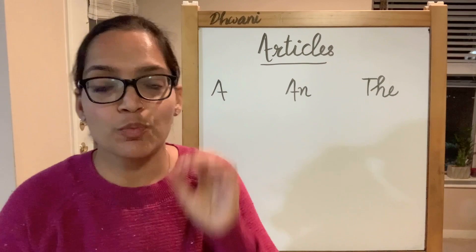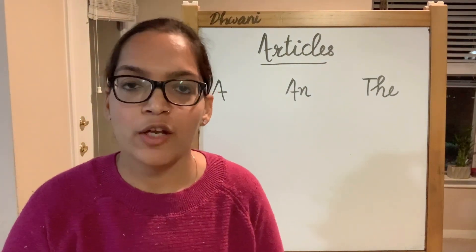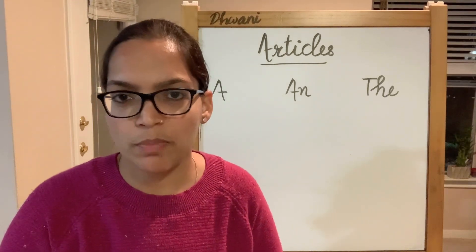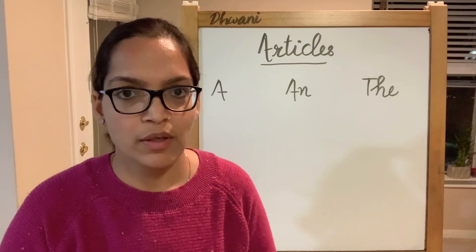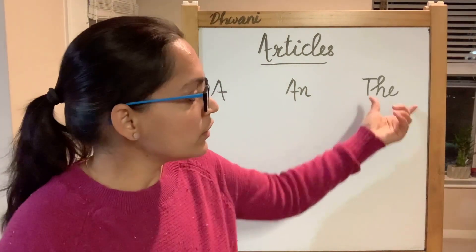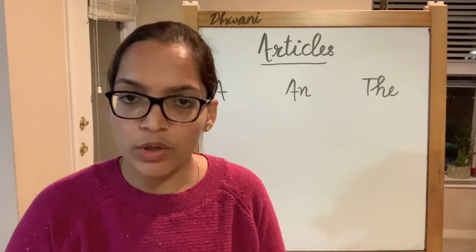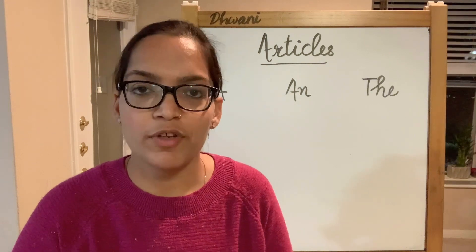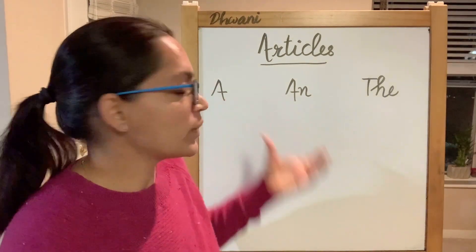A and an point to singular nouns and are also used for general, non-specific nouns. So these are called indefinite articles — we use a and an before those nouns. The is used for plural nouns and also tells us about a definite, specific noun.